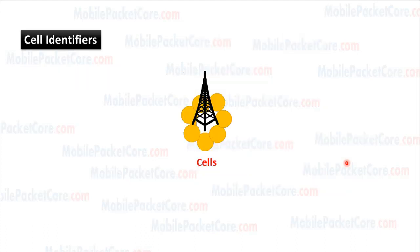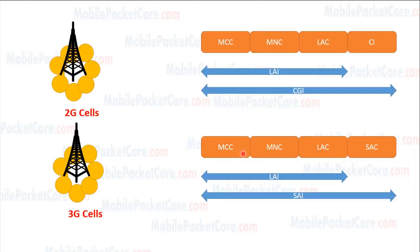Now let's talk about cell identifiers. Every site is divided into several cells. The 2G cells are identified by the Cell Global Identifier, CGI. While the 3G cells are identified by the Service Area Identifier, SAI.